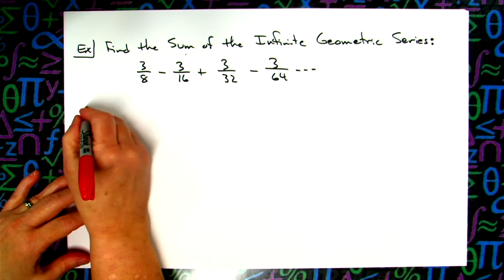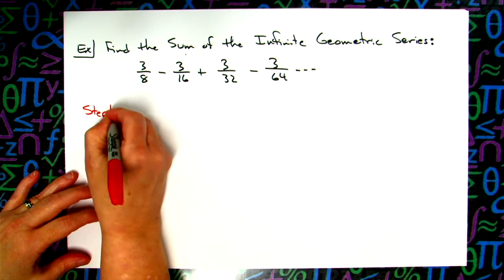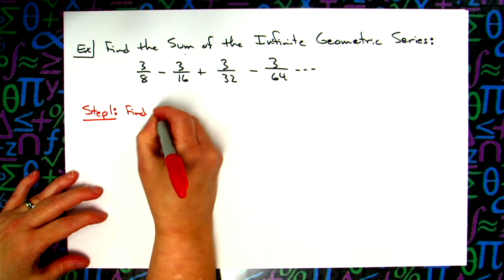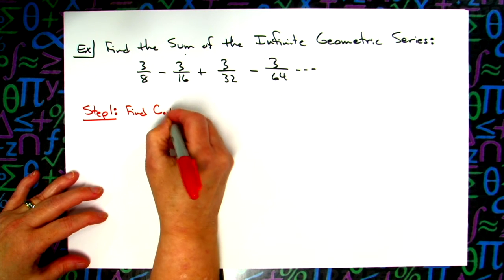So this is definitely going to be a two-stepper. We're going to do step 1, and we want to find that common ratio. I'm going to do CR for common ratio.